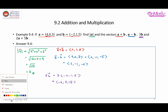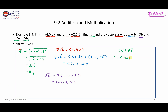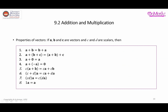Finally, combining scalar multiplication and addition: 2A + 5B. We have 2×(4, 0, 3) = (8, 0, 6), and 5×(-2, 1, 5) = (-10, 5, 25). Adding components: 8 + (-10) = -2, 0 + 5 = 5, and 6 + 25 = 31. So 2A + 5B = (-2, 5, 31).